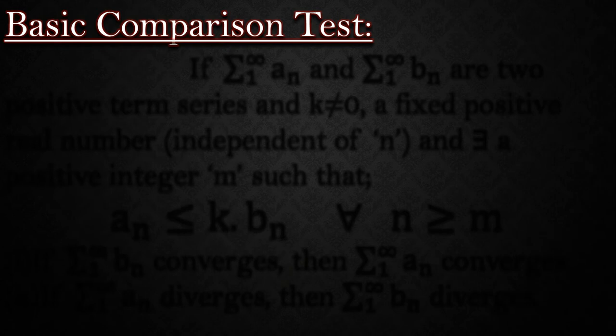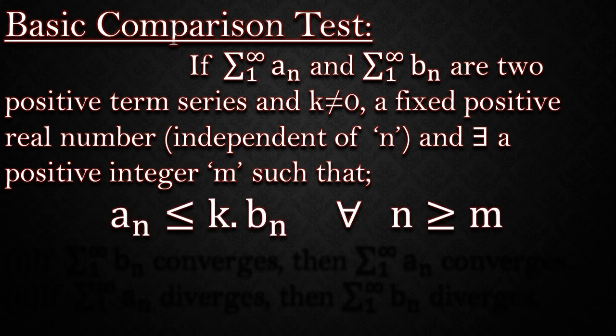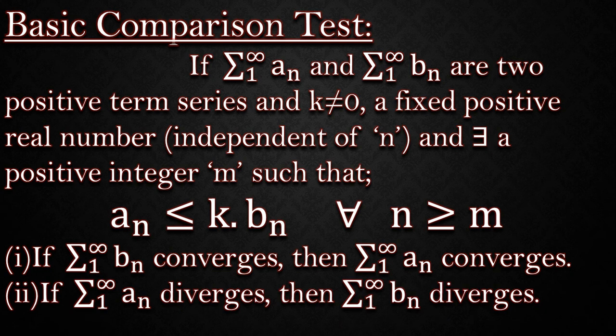Okay, now in basic comparison test, if two positive term series a_n and b_n, and k is not equal to 0, a fixed positive real number independent of n, and there exists a positive integer m such that a_n is less than or equal to k times b_n for all n greater than or equal to m, if b_n converges then a_n converges, and if a_n diverges then b_n diverges.